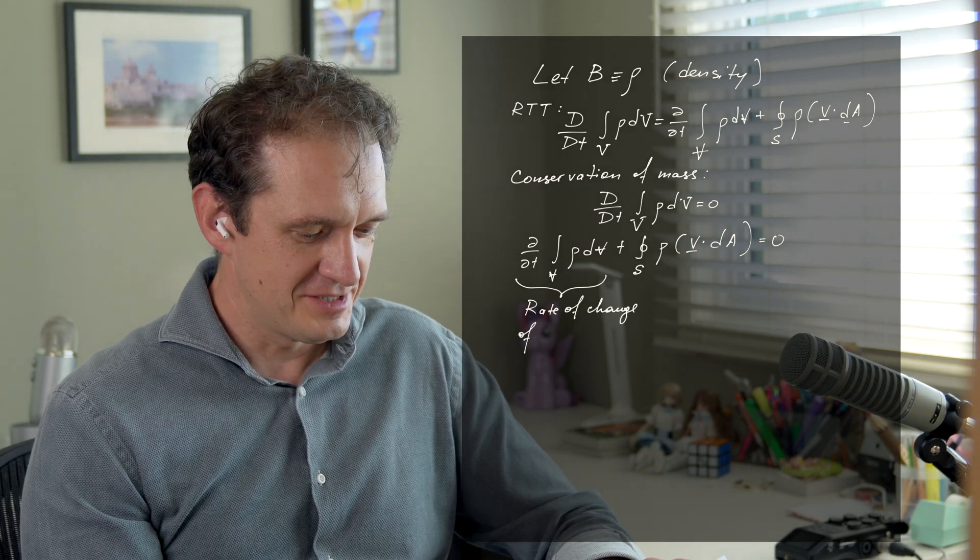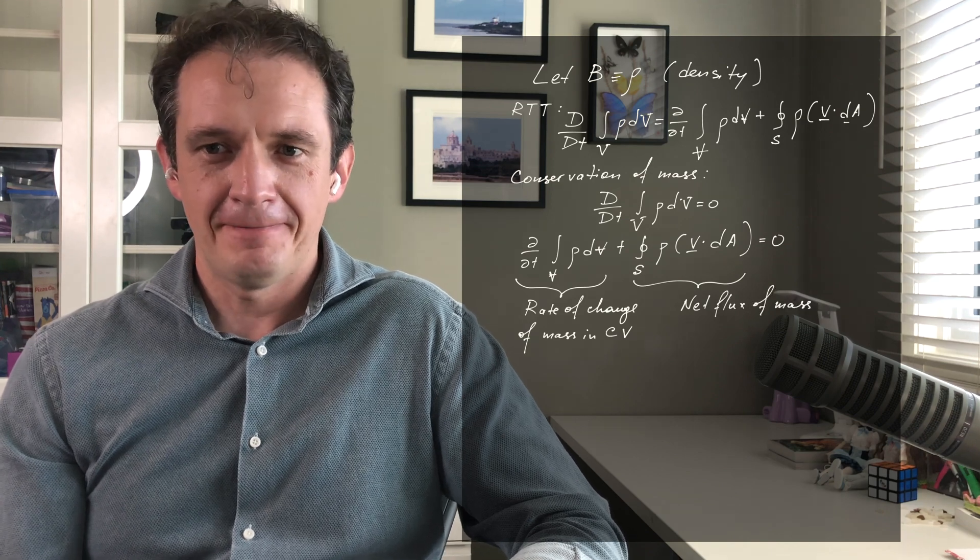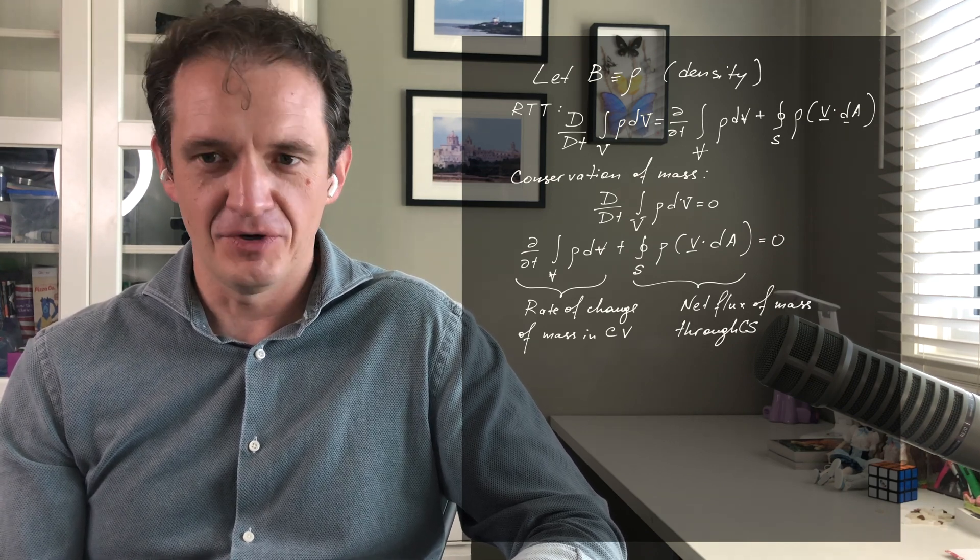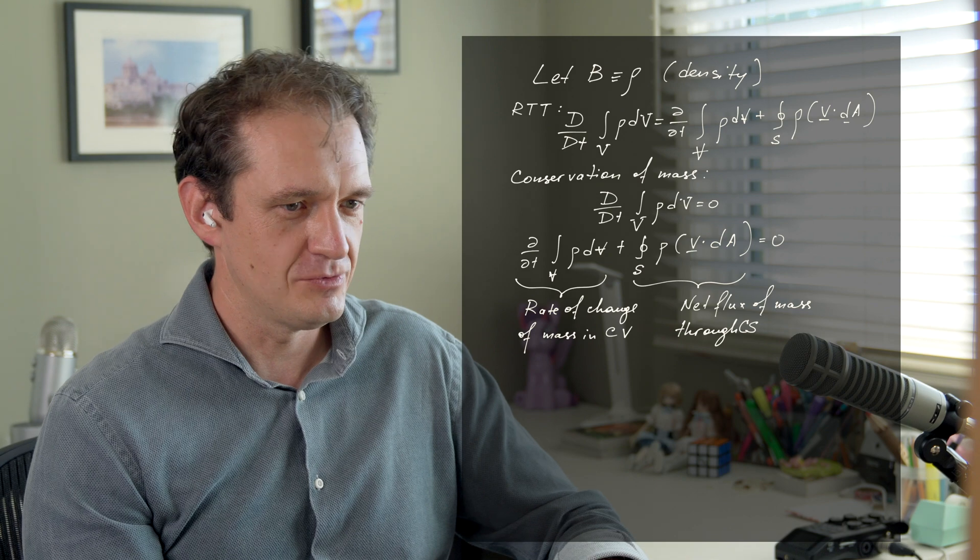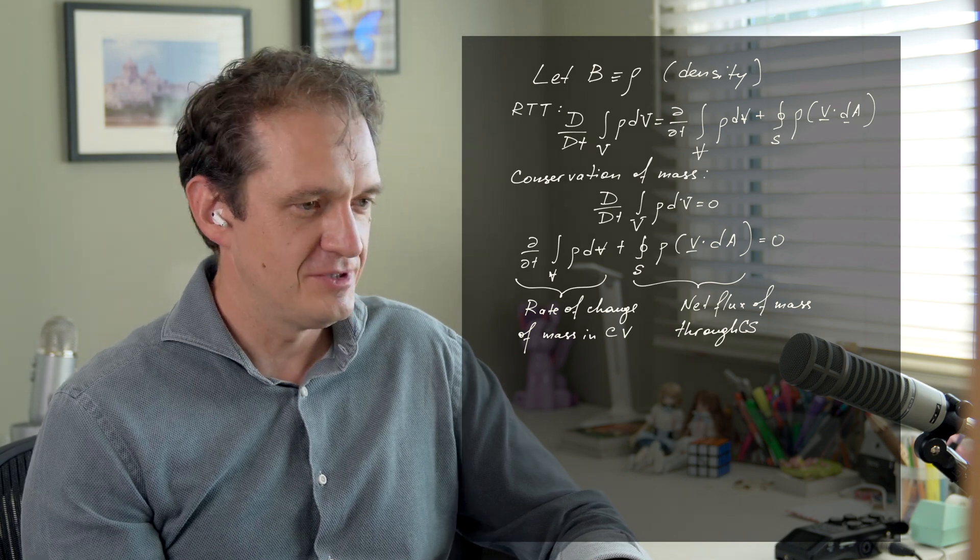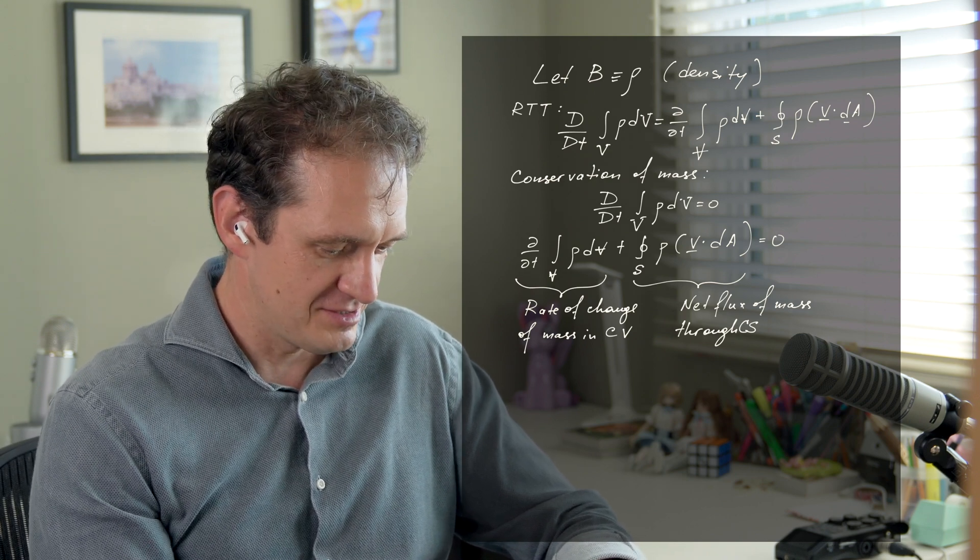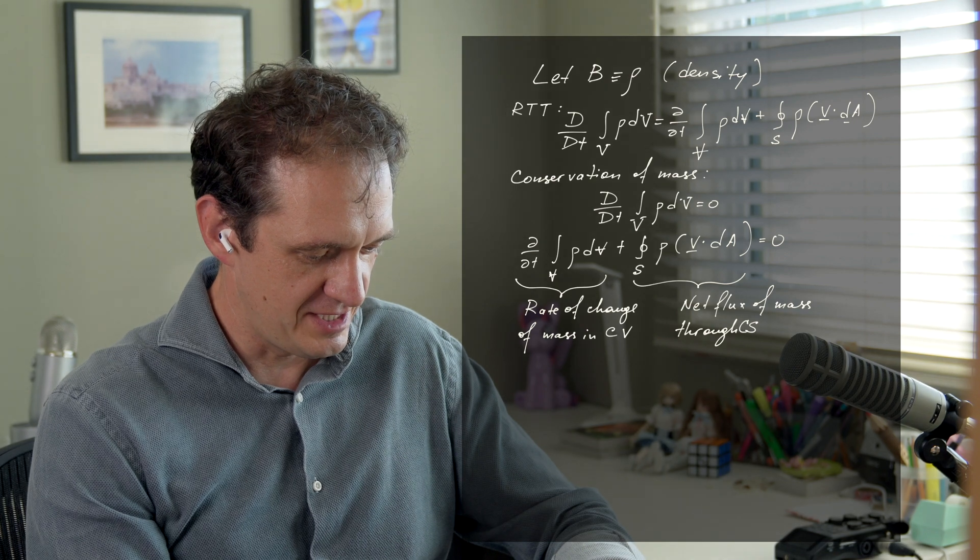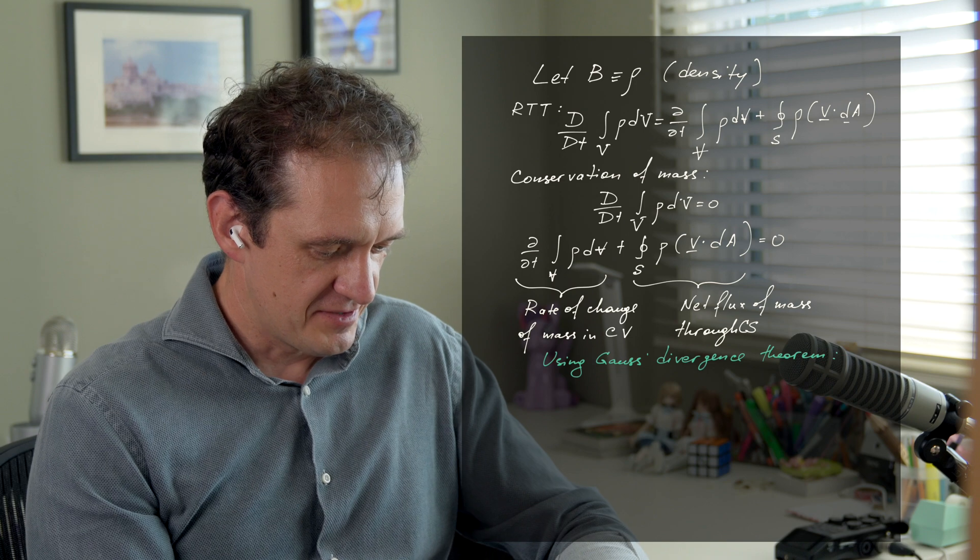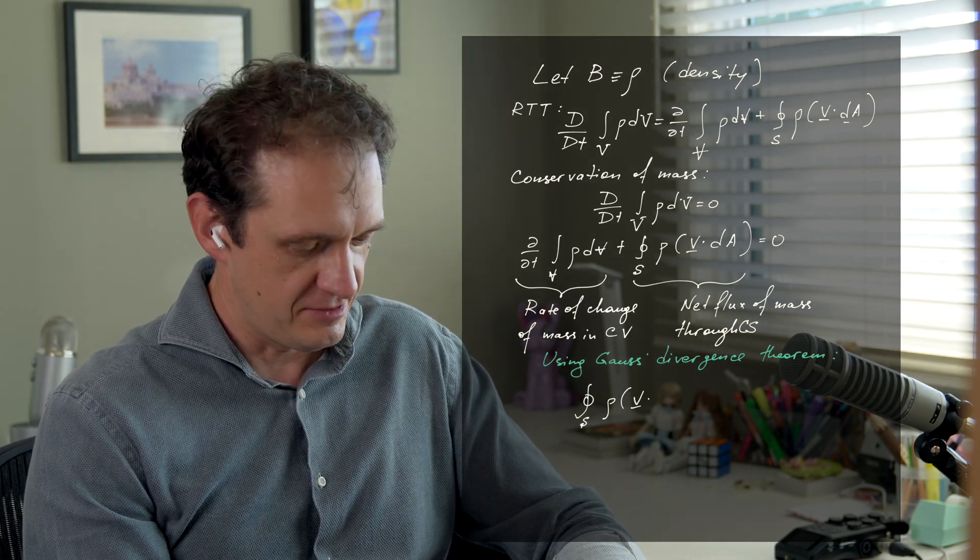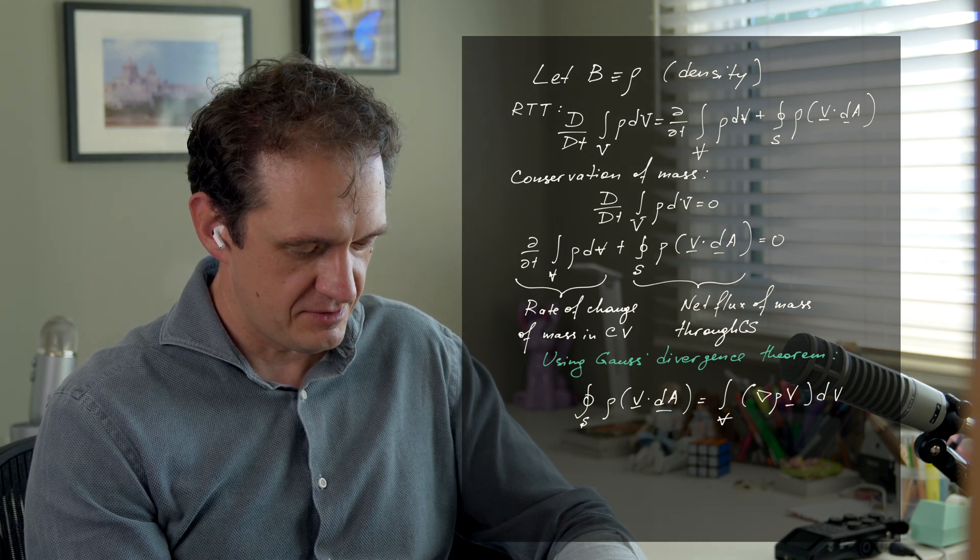This is a little bit more insightful. These two terms balance each other, but it would be nice if we had both integrals in terms of volume integrals rather than one surface, one volume. We could do that. In one of the previous lectures we talked about Gauss's divergence theorem, so we can use that to convert the surface integral into a volume integral. More specifically, the surface integral of rho V dA is equal to the volume integral of del dot rho V.